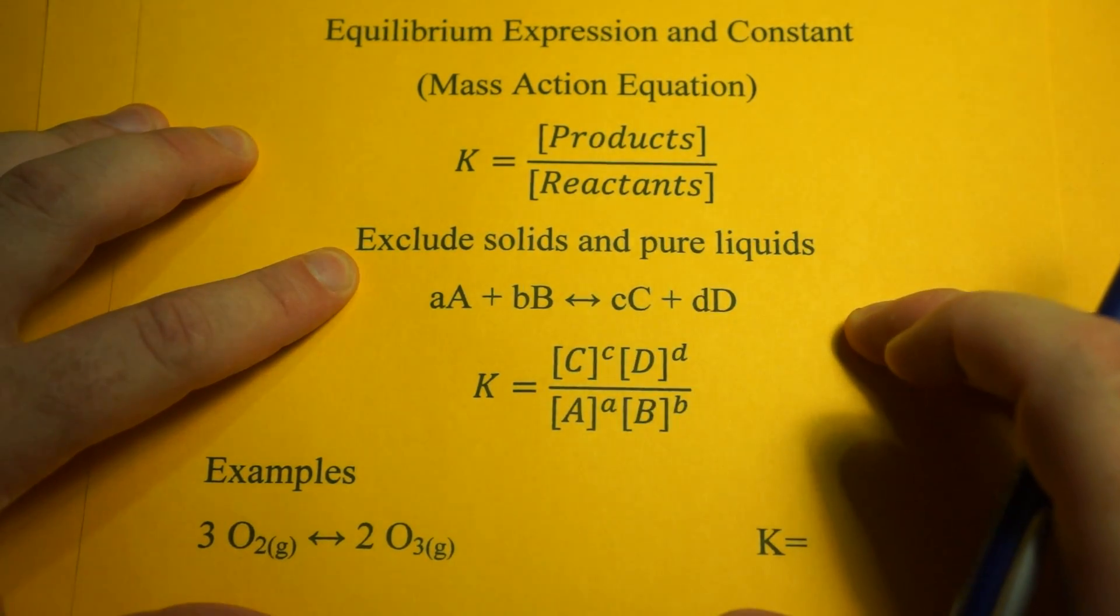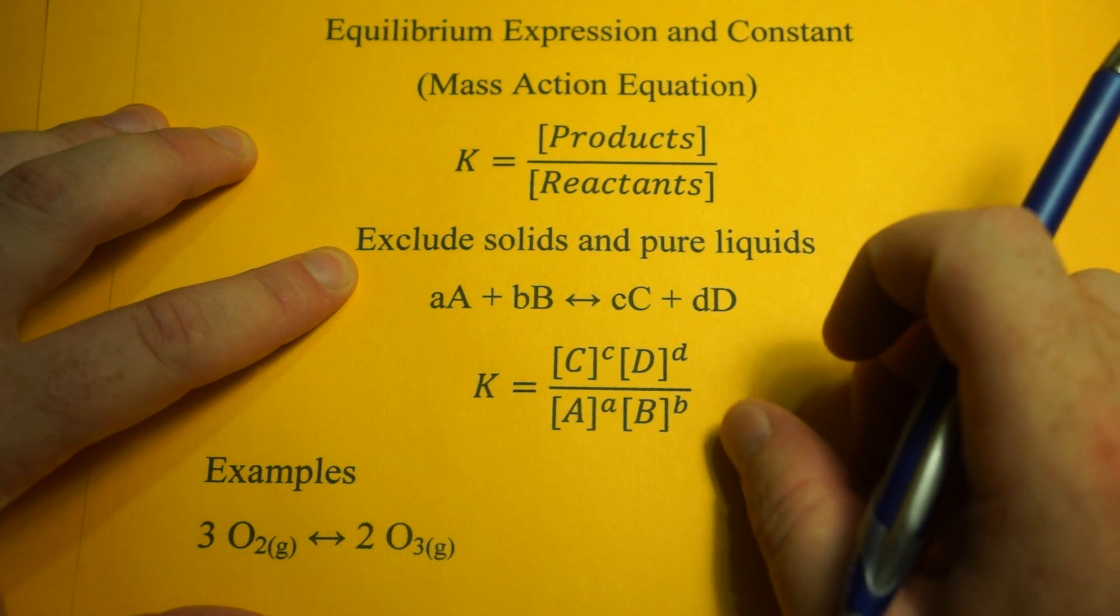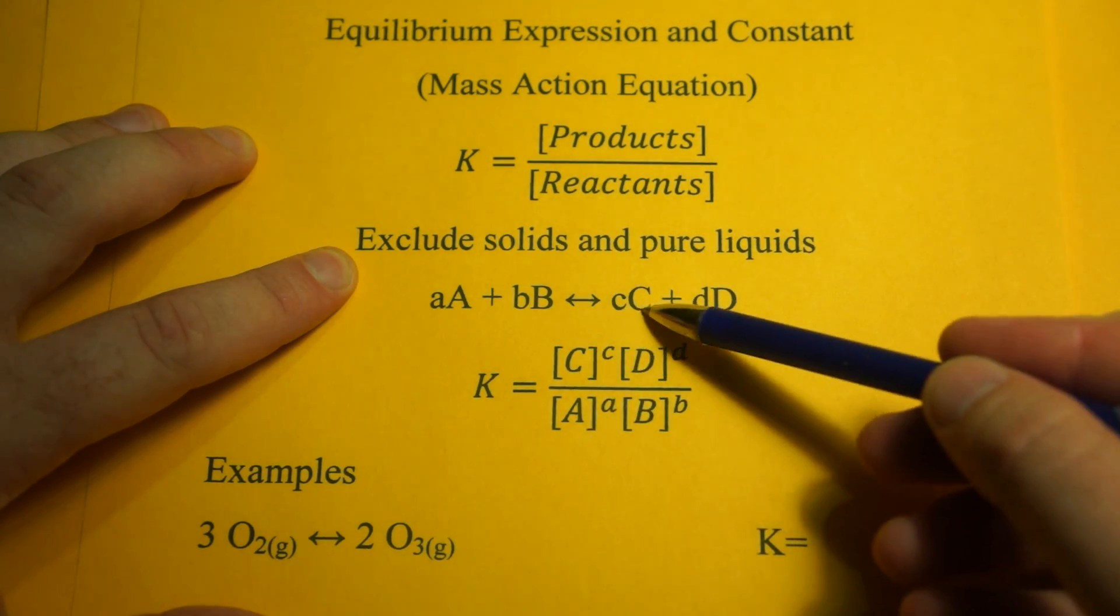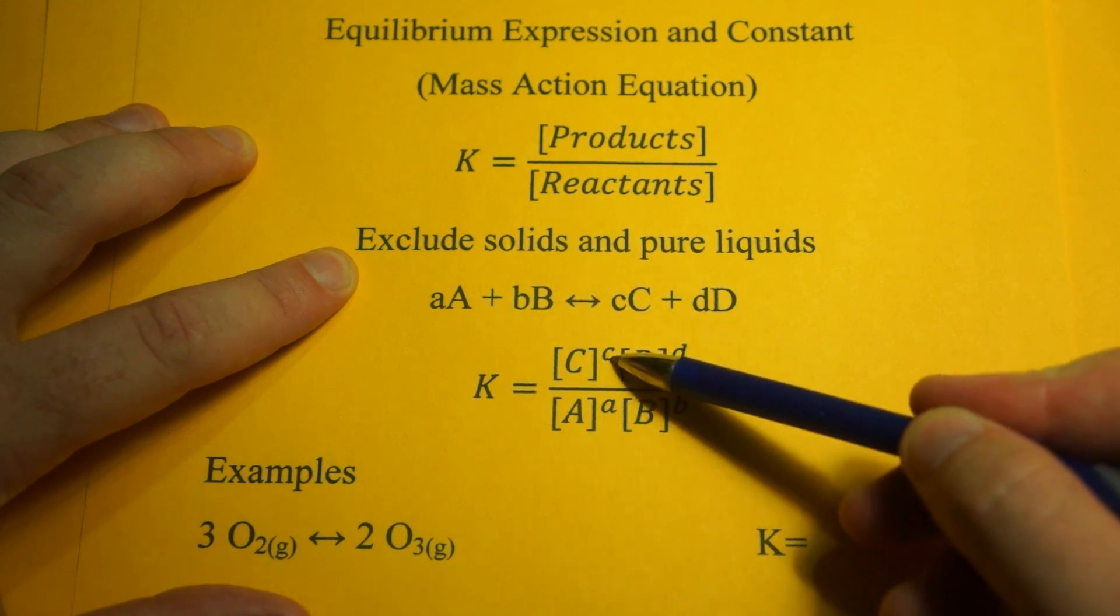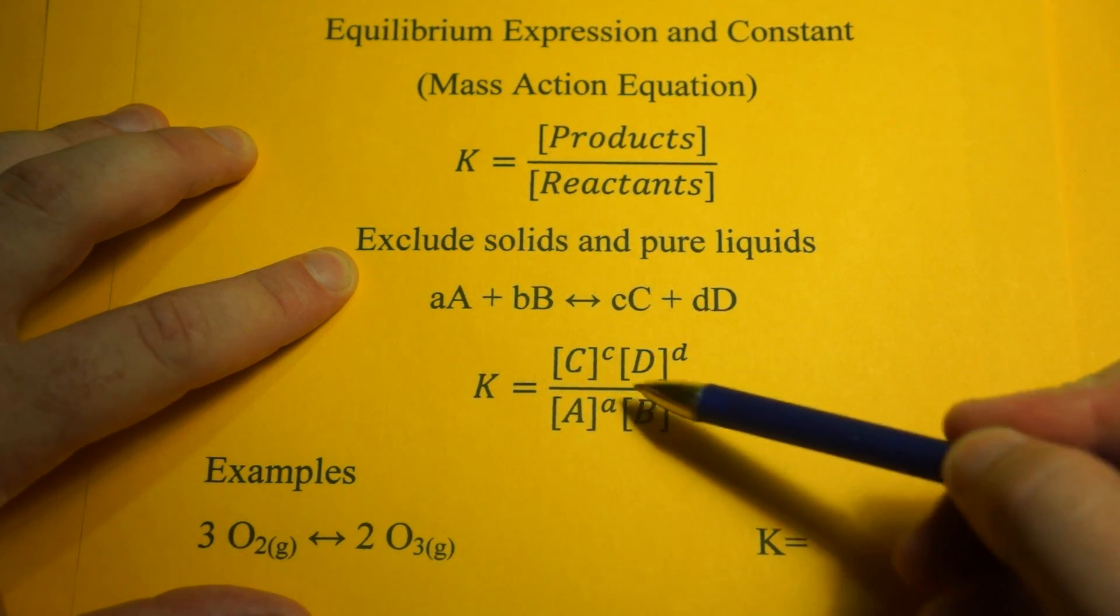Here's a typical reaction. What you do is take the concentration of your products, elements C and D. You take the concentration of C and raise it to the coefficient. The power is going to be the coefficient.